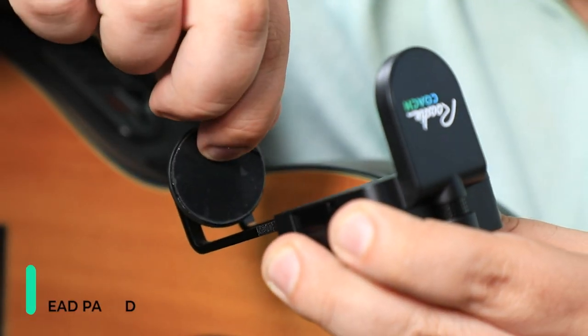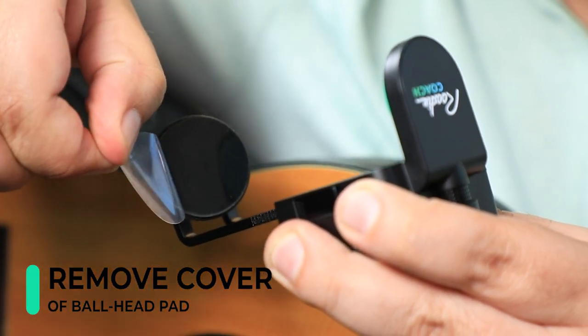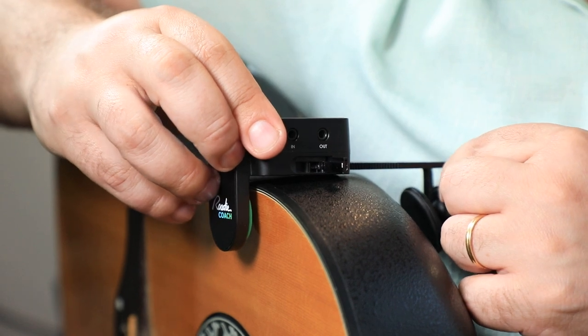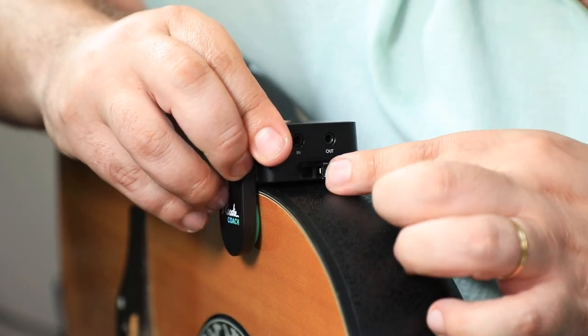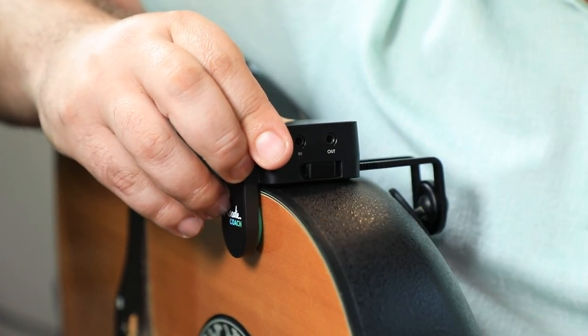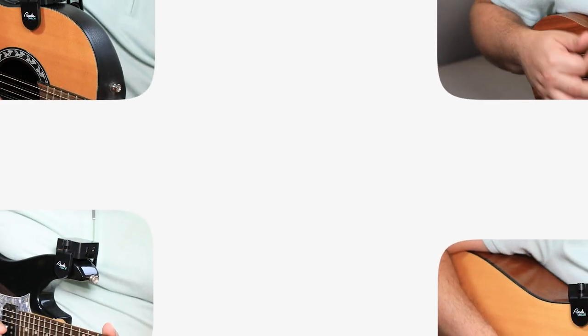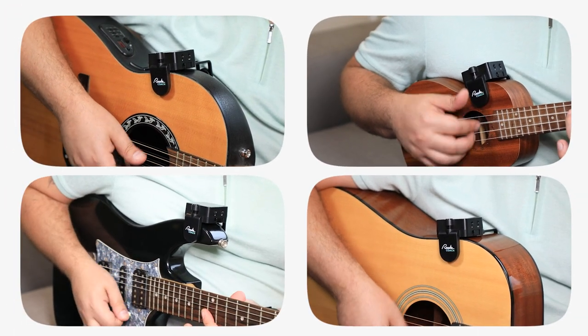When using the ball head pad, don't forget to remove the plastic cover that ships with the device. This pad is extra grippy and can be cleaned with water if it gets dirty. We hope you enjoy using Roadie Coach and thanks for watching this video.